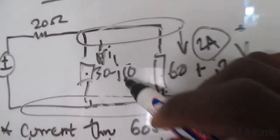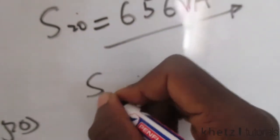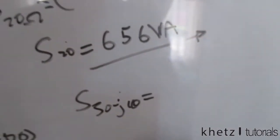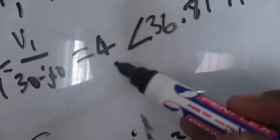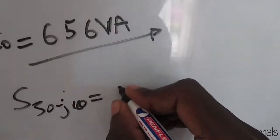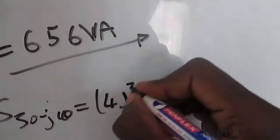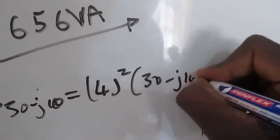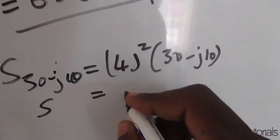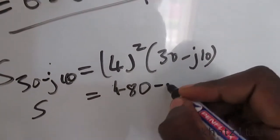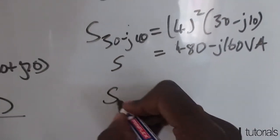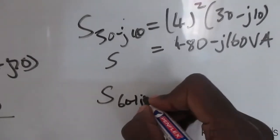Moving to the next element — the 30 minus j10 branch: the current flowing through it has magnitude 4 amperes. So the complex power is 4 squared multiplied by (30 minus j10), which gives 480 minus j160 volt-amperes.